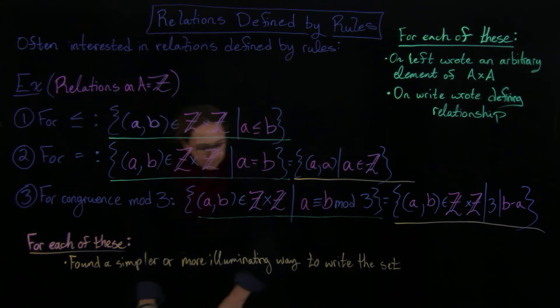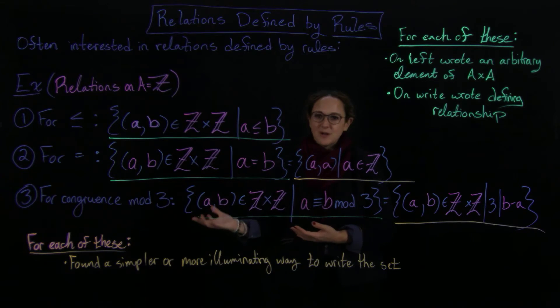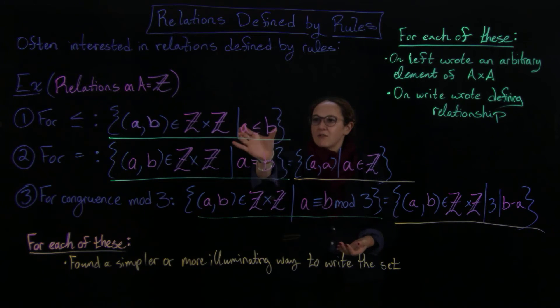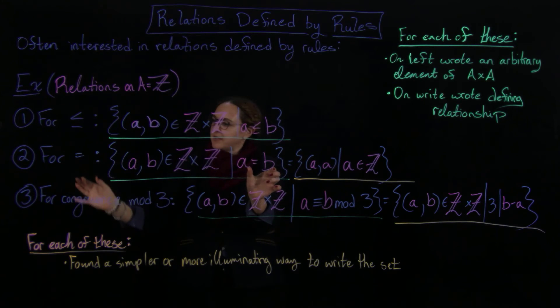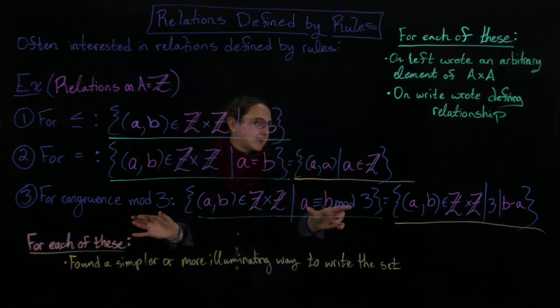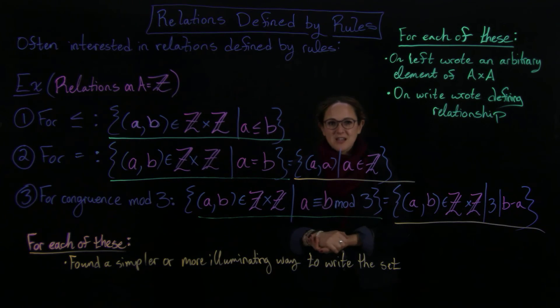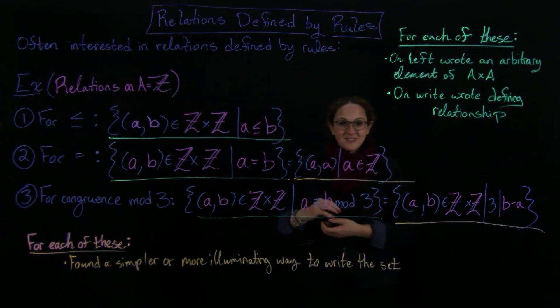Okay, so a lot of times you want to define relation by rules such as less than or equal to or equal. So in these ones we just wrote on, right, this less than or equal just ended up here. The equals ended up here. Congruence mod 3 ended up here. And then sometimes you can rewrite it in a way that just kind of makes more sense. And that's what we did in that part where you look at it and you immediately know what we mean.